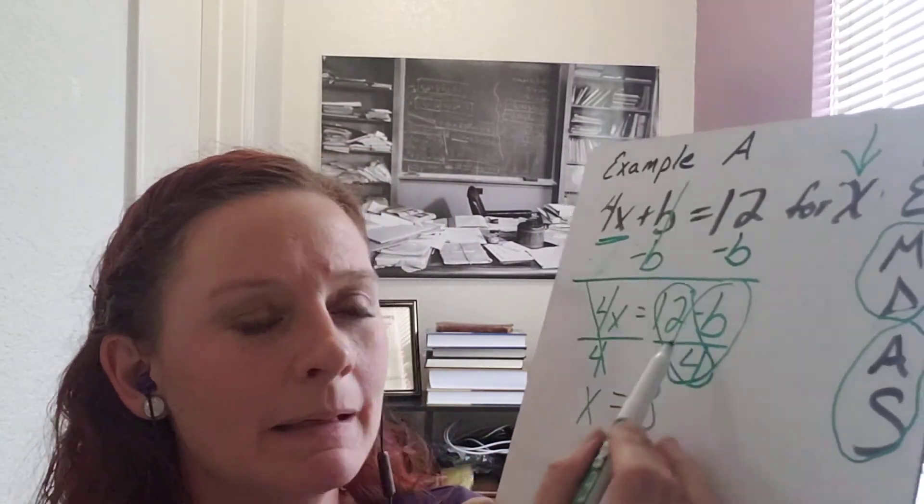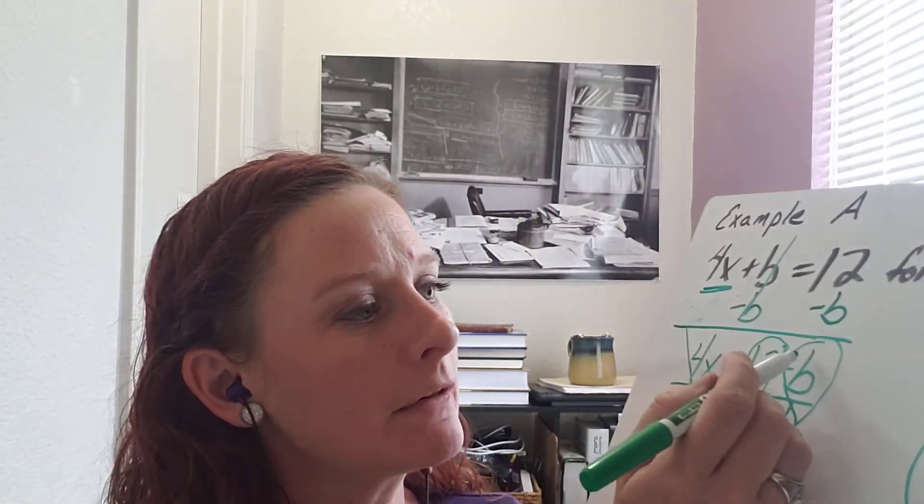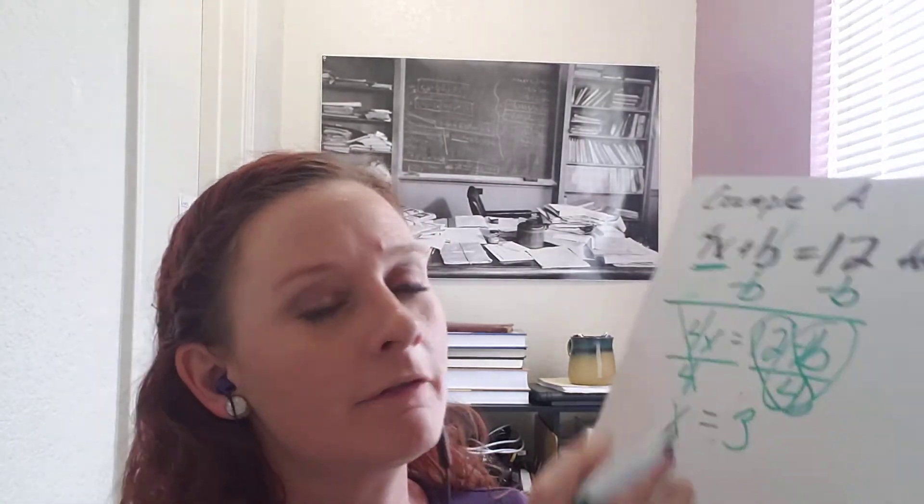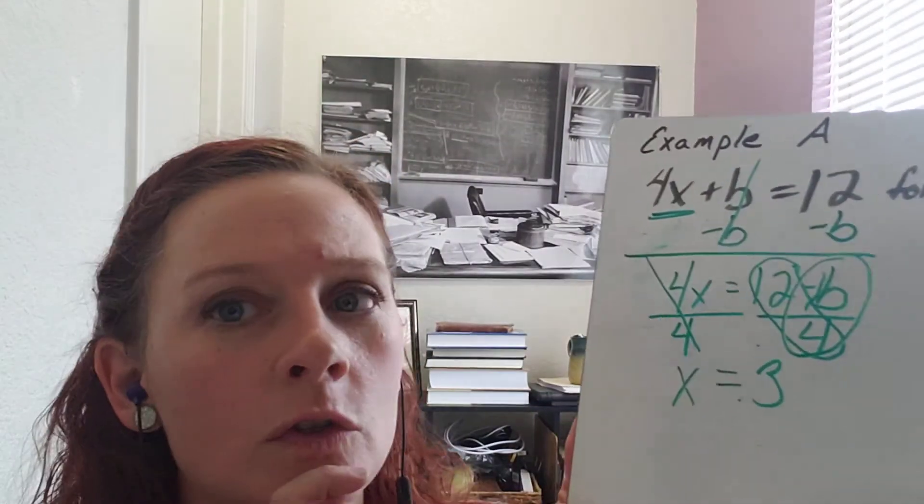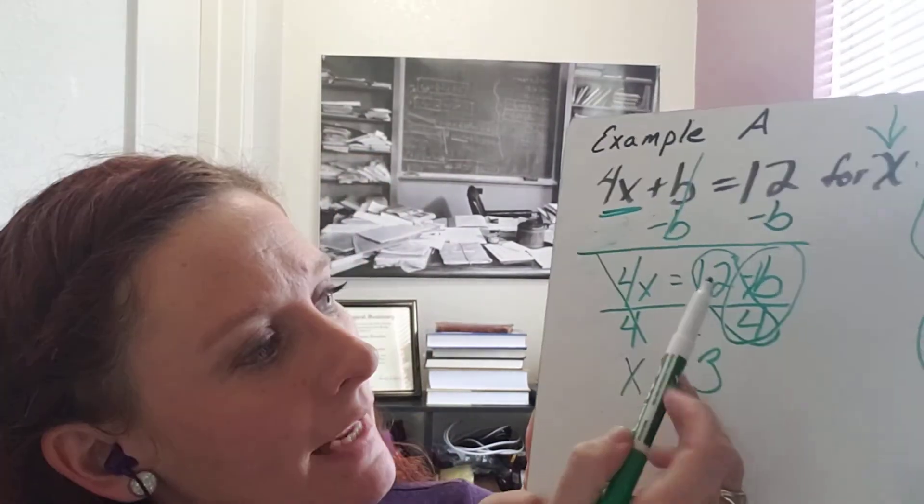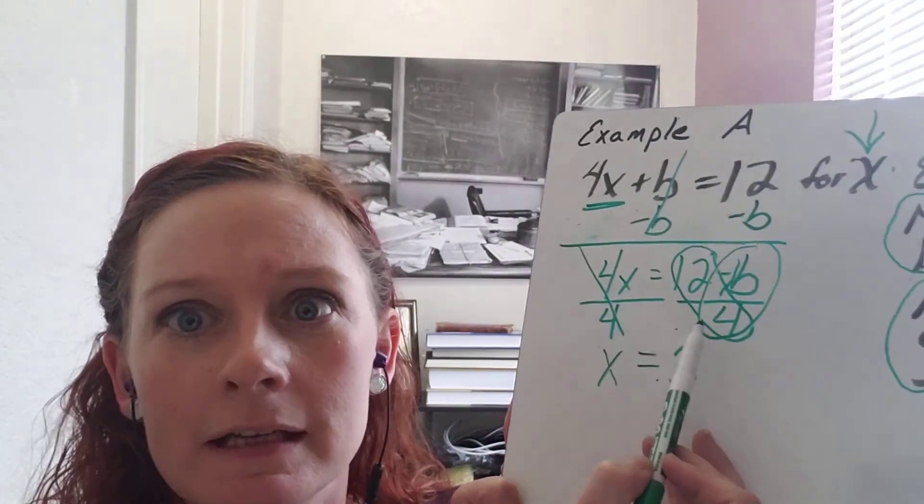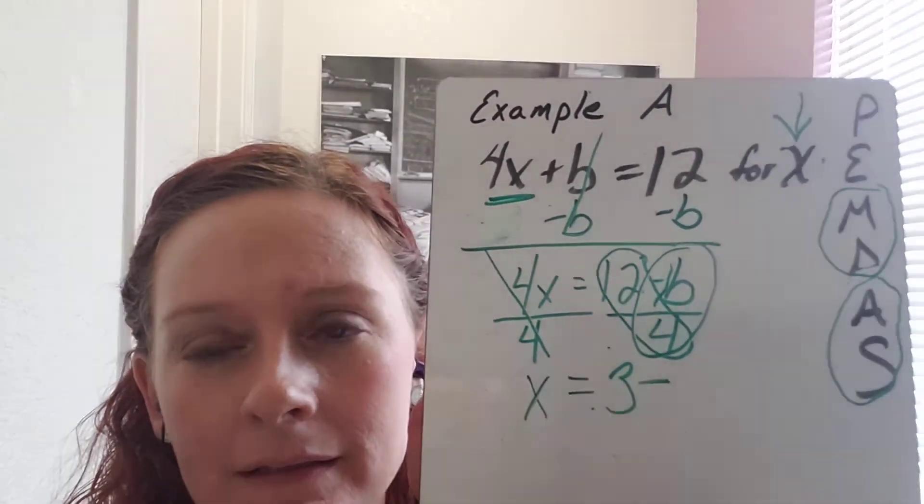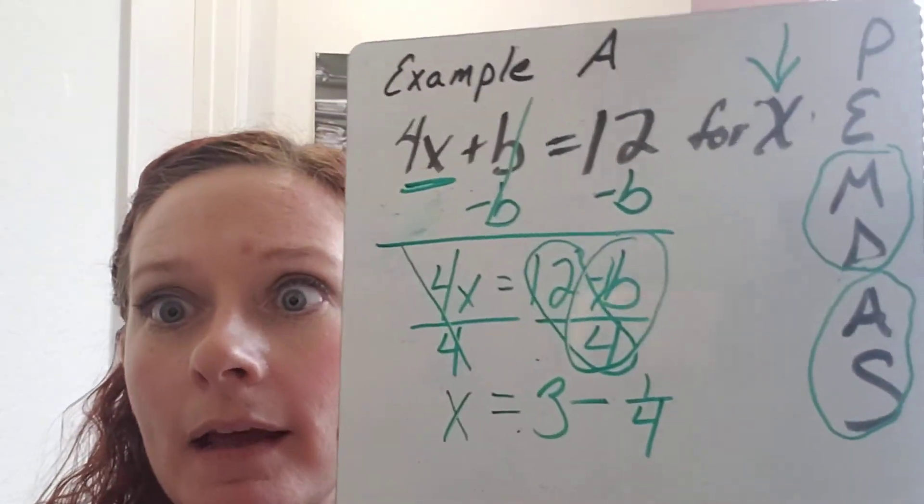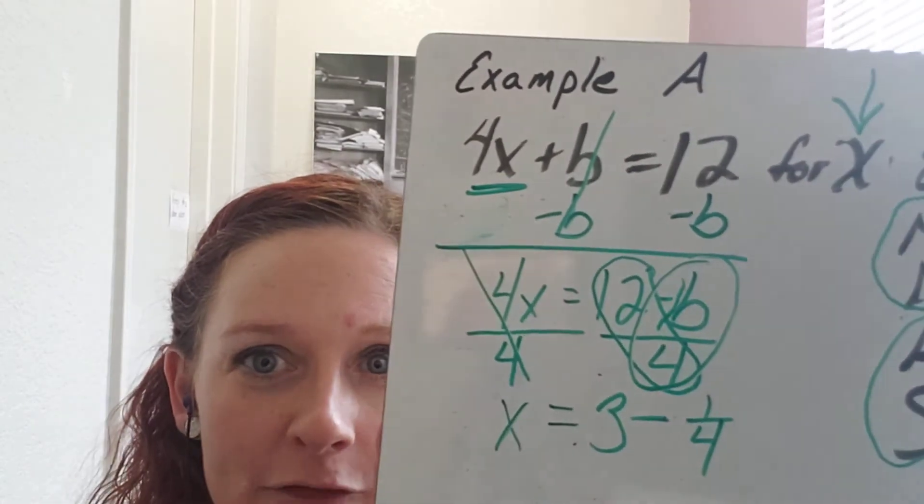12 divided by 4 is 3. And then this can get a little tricky. There's a super secret hidden one in front of the B and I like to write it. And then I'm going to divide my signs first and negative divided by a positive is a negative. And then I'm going to say 1 divided by 4 and that's 1 fourth because we love fractions. So we're going to leave it as a fraction.